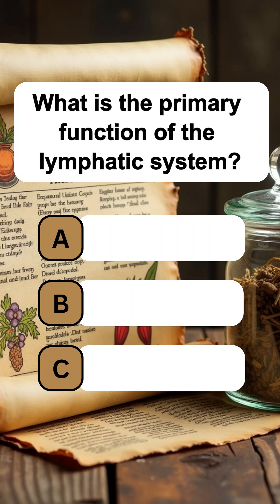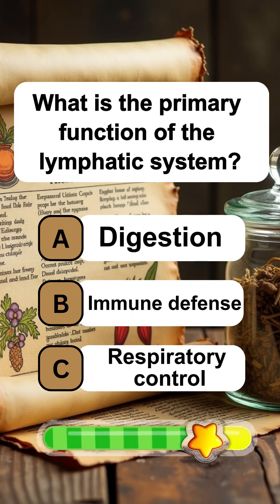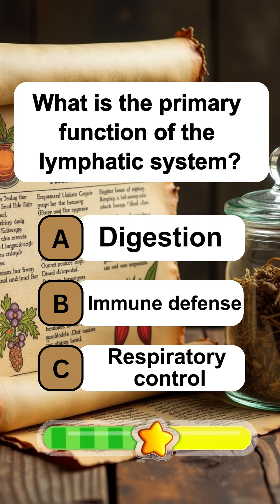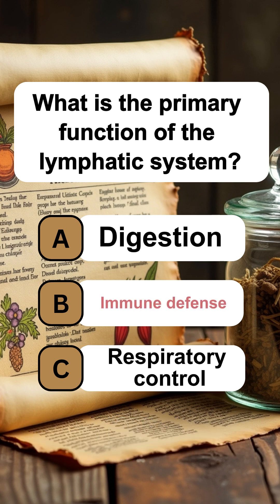What is the primary function of the lymphatic system? The answer is B: Immune defense.